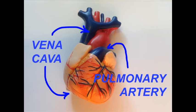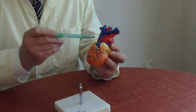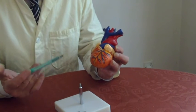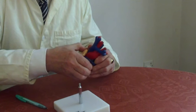It comes back from the lungs through the pulmonary vein, oxygenated but now at low pressure. It is then raised in pressure by the left side of the heart and sent out through the aorta to be recirculated.